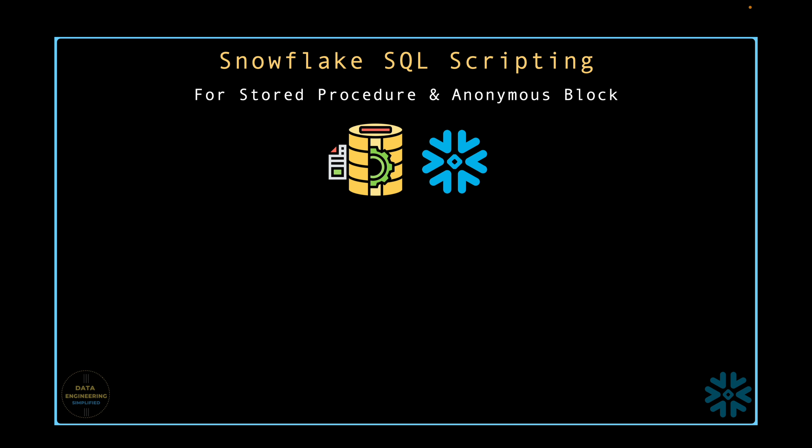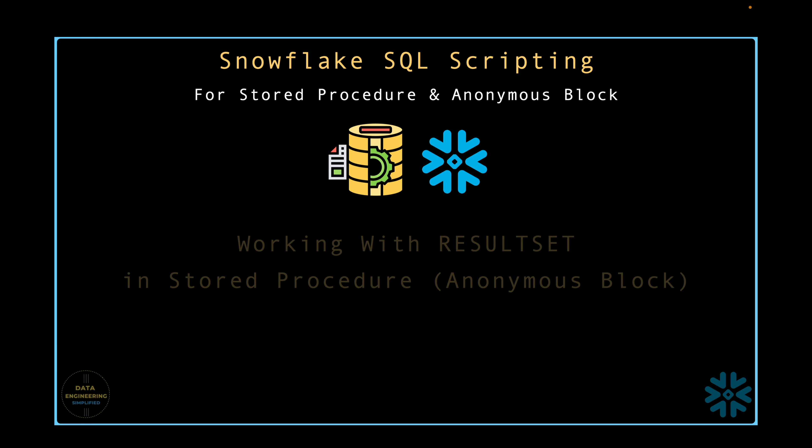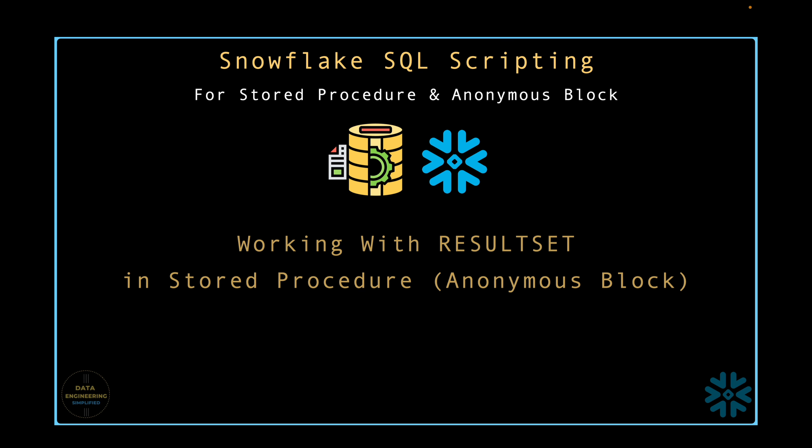In the last two chapters we centered our discussion around cursor objects. Now in this chapter we will mainly emphasize on result set objects while writing anonymous blocks or stored procedures using Snowflake SQL scripting.